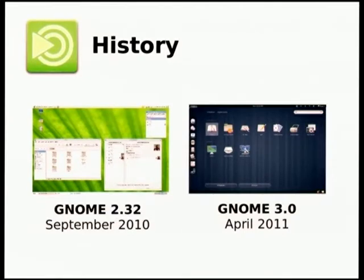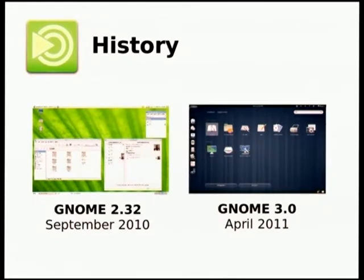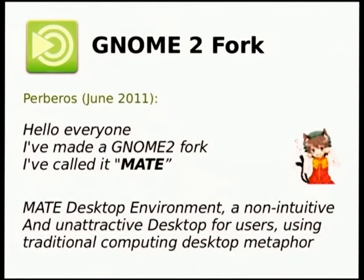The latest release of GNOME 2 was in September of 2010, and a year later GNOME 3 came out. It was a completely different desktop environment, and not all users of GNOME 2 liked this desktop. So in April, Perberos, an Arch Linux user, started a fork, calling it MATE.